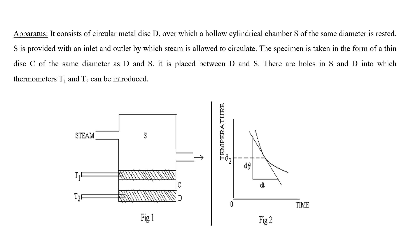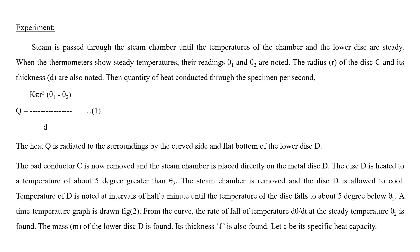For the experiment, steam is passed through the steam chamber until the temperatures of the chamber and lower disc are steady. When thermometers theta-1 and theta-2 show steady readings, those values are noted. The radius r and thickness d of disc C are measured. The quantity of heat conducted through the specimen per second is given by: Qc = k × π r² × (θ1 − θ2) / d.